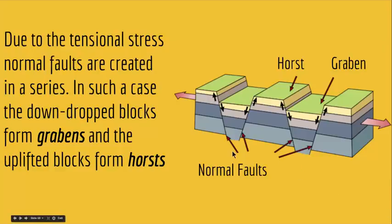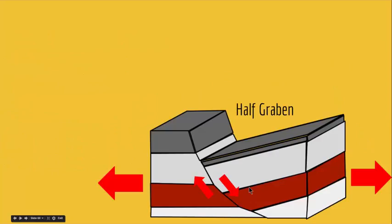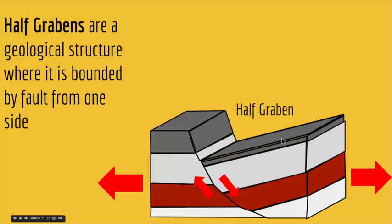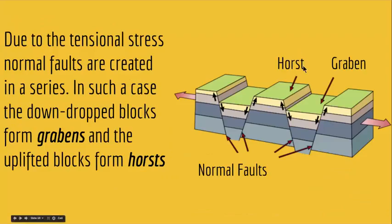In Horsts and Grabens, we have faults on two sides. But if you have a fault on only one side, that is called a half-graben. A half-graben is a geological structure bounded by a fault from one side only. Since only one side has a normal fault, that foot wall goes up and the hanging wall goes down, while the other side has no fault.